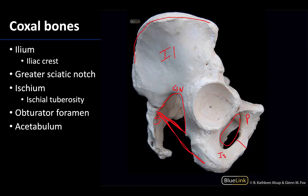This posterior portion, really built up right here, is the ischial tuberosity — sometimes referred to as your sit bones, because when you're sitting down you're essentially sitting on the ischial tuberosity, with ligaments, skin, and other structures in that region. The ischial tuberosity is this really thickened, rugose portion of the ischium.